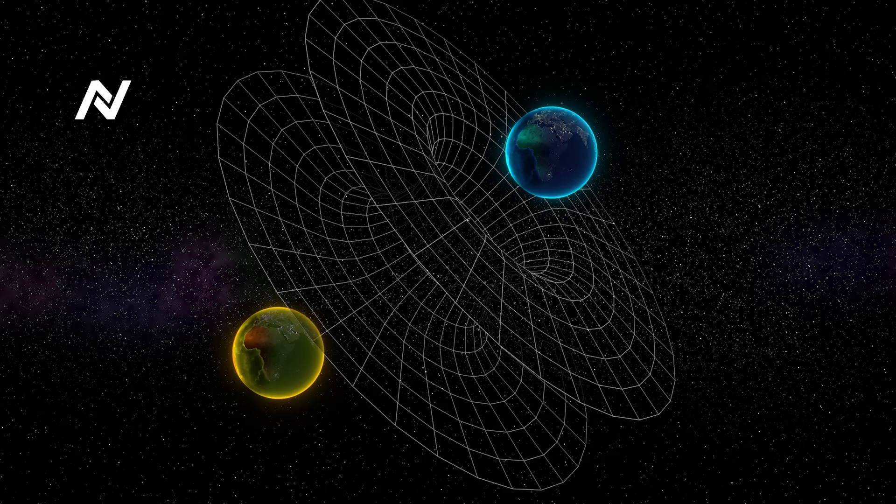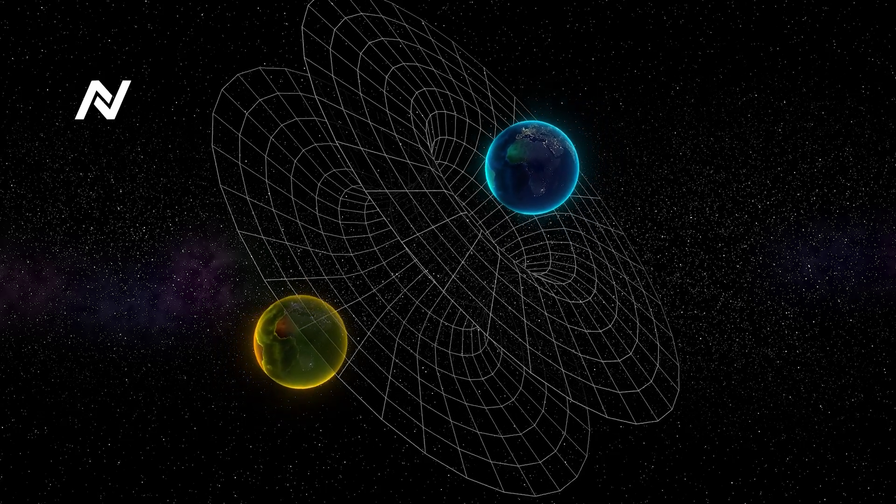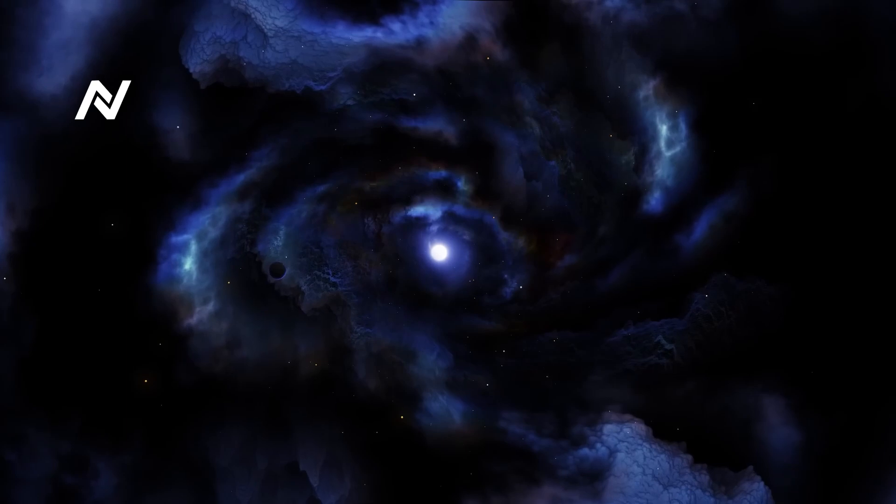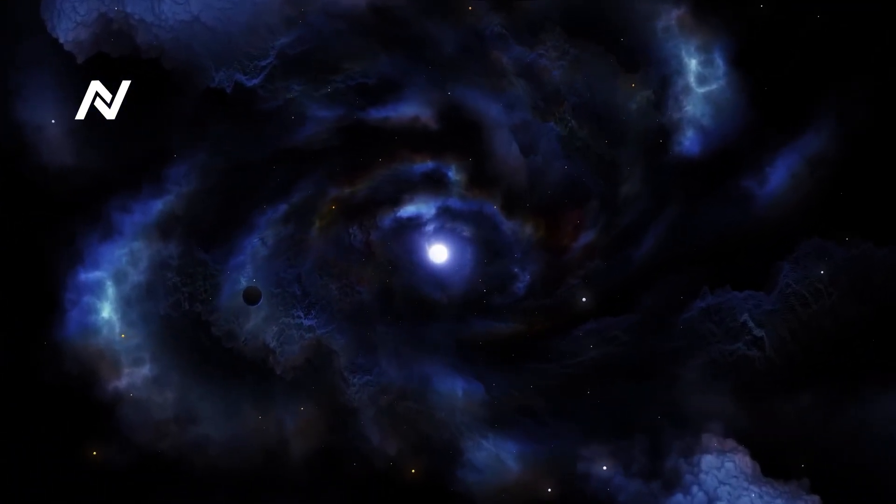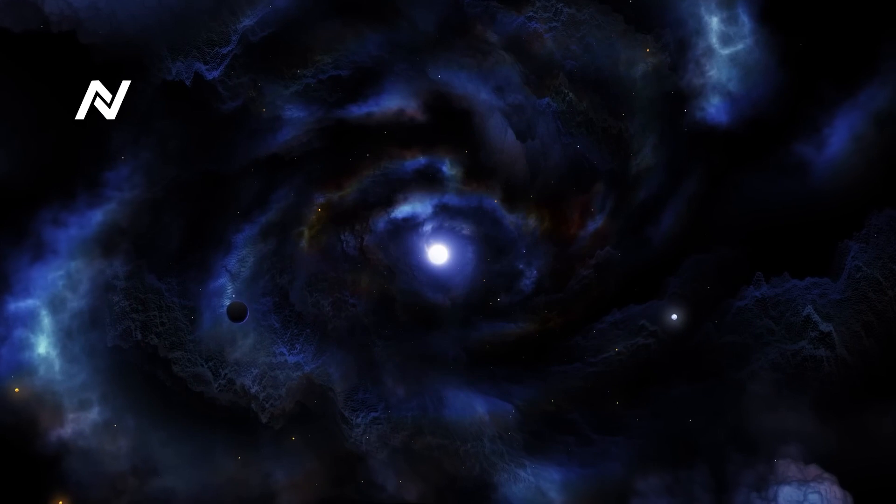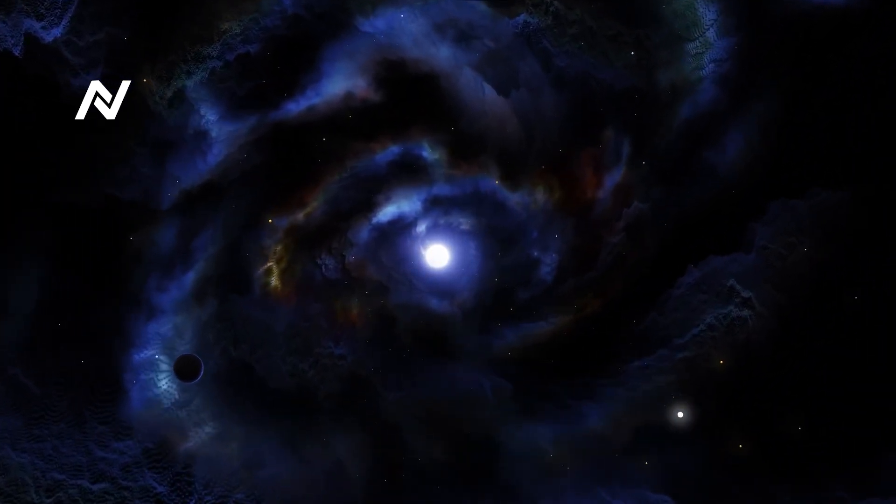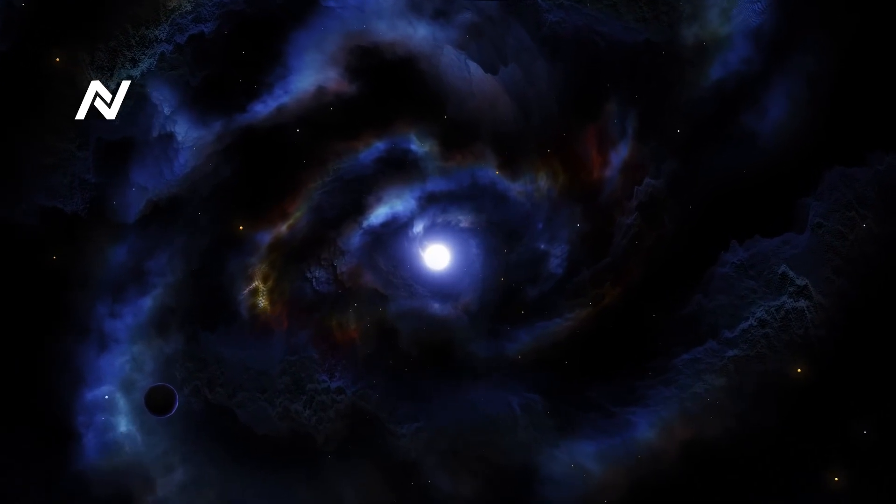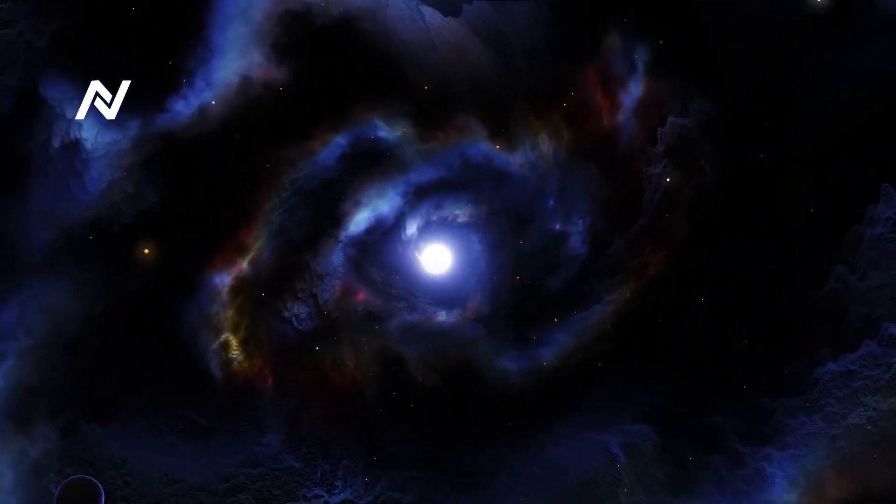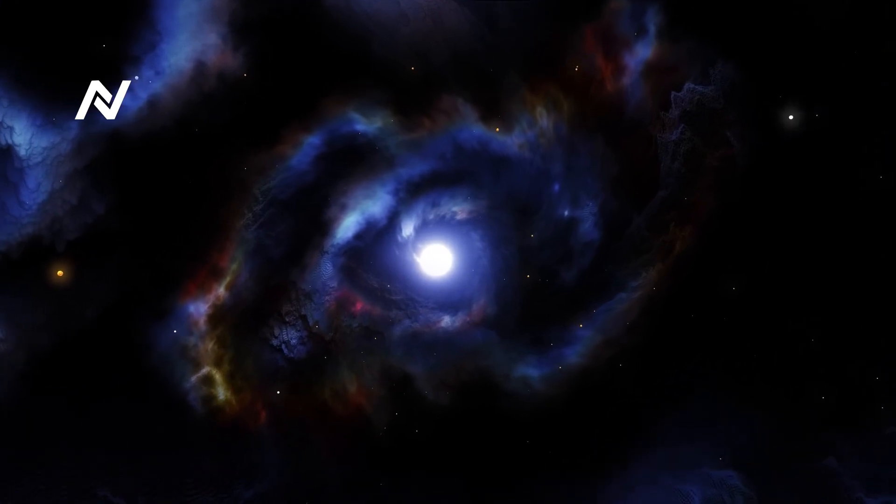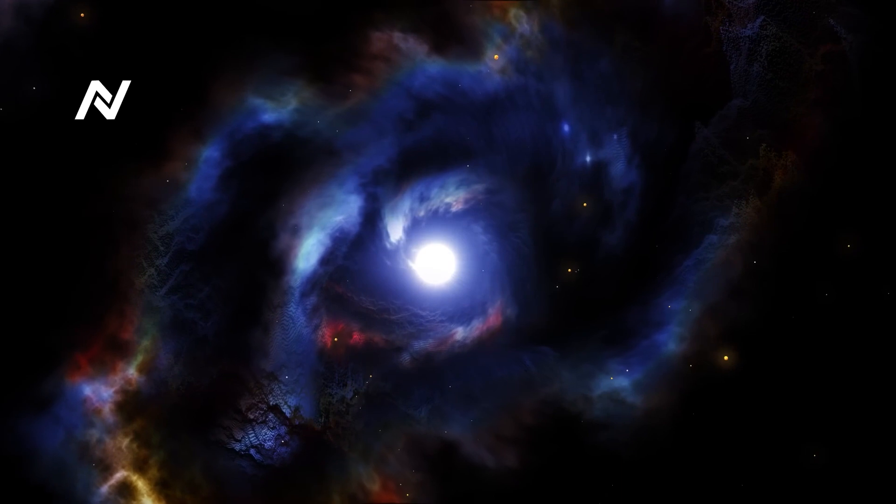Now let's take this idea a step further. If we could see space-time, could we also manipulate it? Right now, our understanding of space-time is largely theoretical. We know that massive objects bend it, and we know that the universe itself stretches and warps it as it expands. But what if we could actually control these warps and bends? Could we bend space-time enough to create shortcuts through space, perhaps leading to the development of faster-than-light travel?